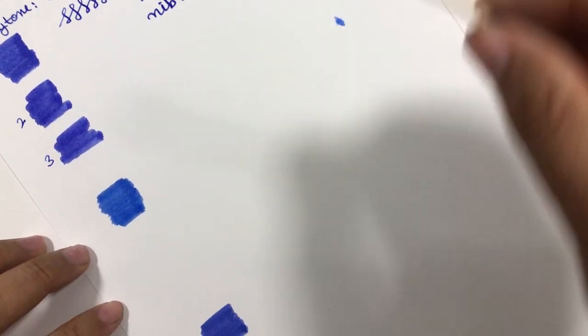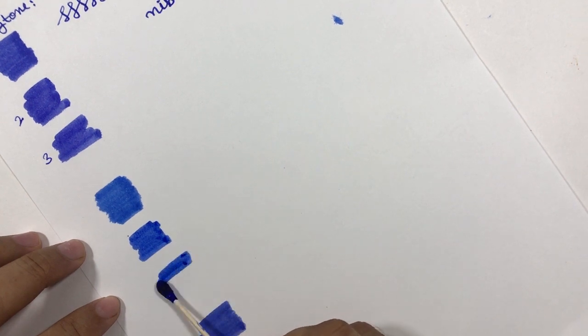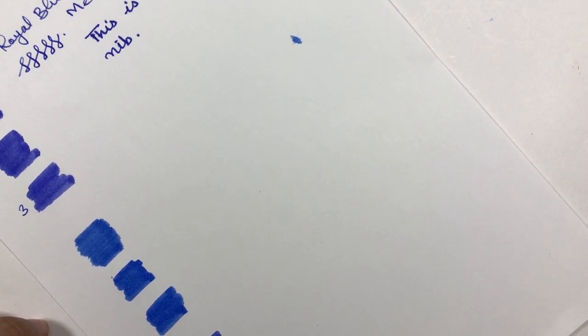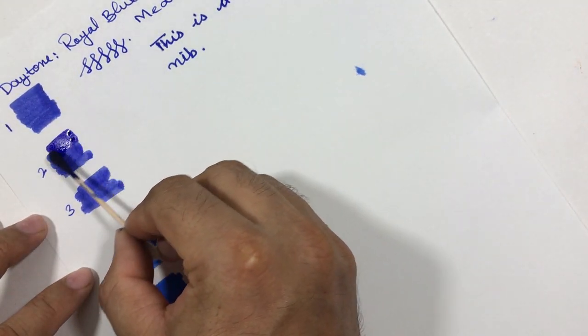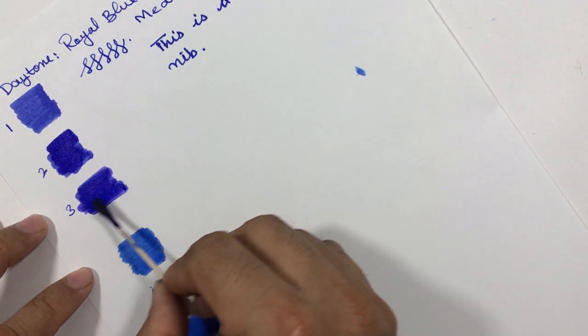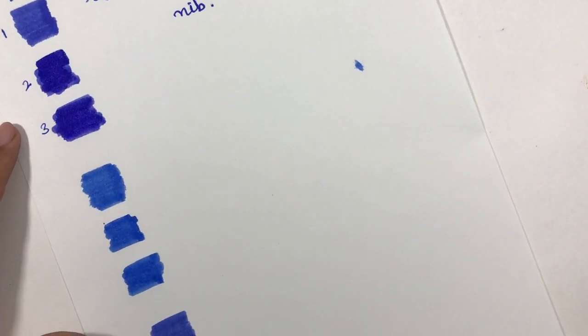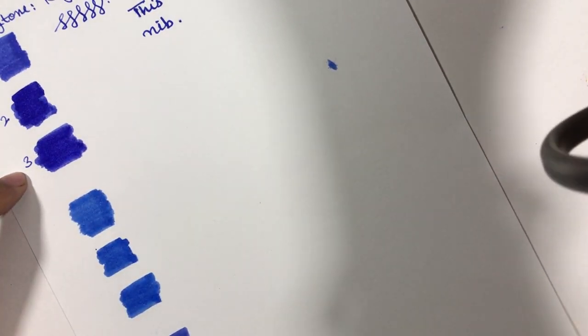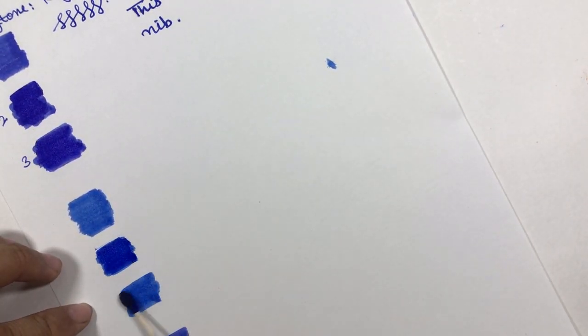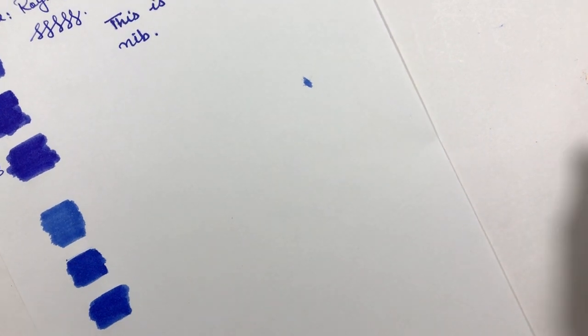Same for Camlin and same for Parker. This is dry so now I'll have a second pass. If we write second pass, this is the second pass. We can have second pass for Camlin as well and Parker as well. Now let me write something with Camlin.